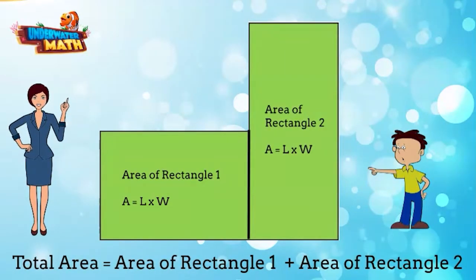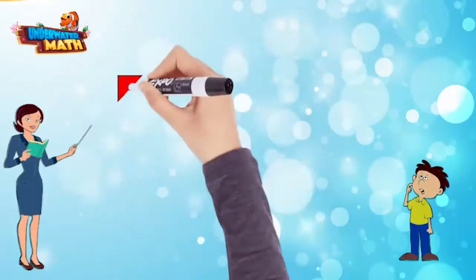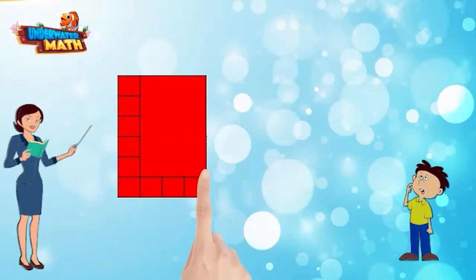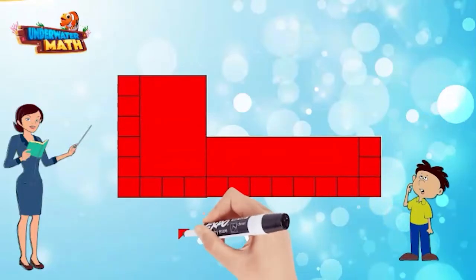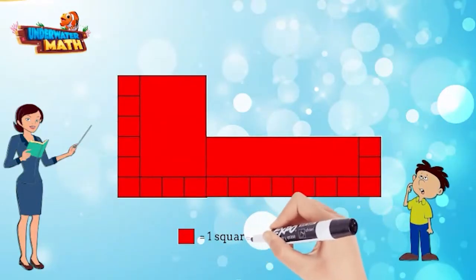Let me try to do some problems. Ethan, find the area of this figure. Each square equals one square foot. Remember to find the area of each rectangle and add them together. Piece of cake.